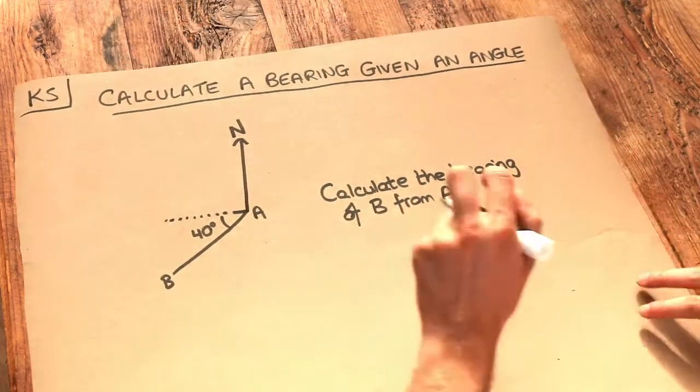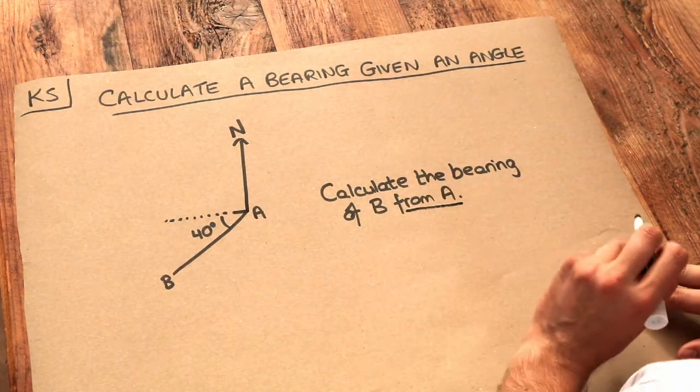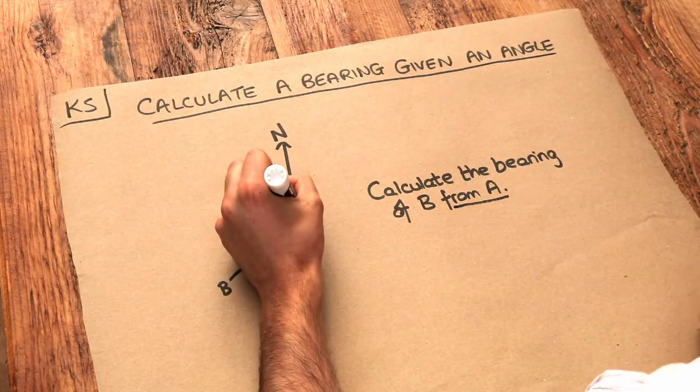Now, do you remember how bearings work? If we're calculating the bearing of B from A, that means the angle has been measured at A.